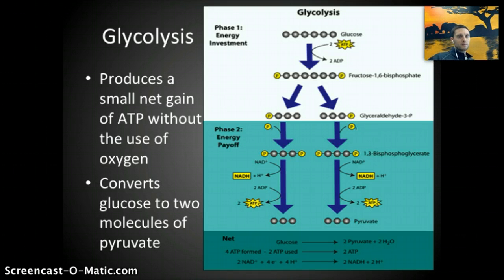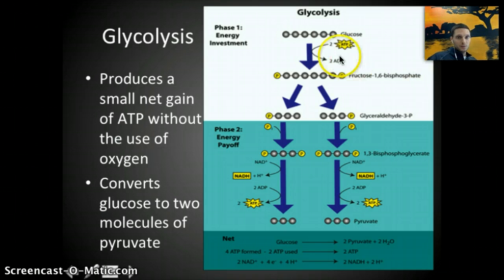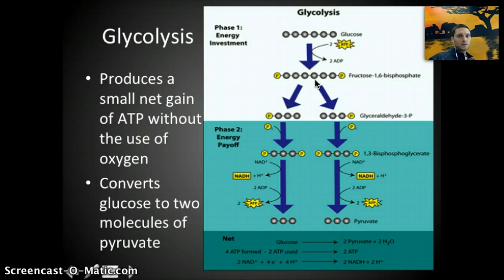Let's look at glycolysis in more detail. It produces a small net gain of ATP without the use of oxygen and converts glucose to two molecules of pyruvate. In the first phase, energy is actually used: starting with a molecule of glucose, two ATP are used to attach two phosphates to the molecule. Enzymes rearrange the glucose into fructose. Glucose and fructose are both monosaccharides containing six carbons, 12 hydrogens, and six oxygens. The fructose now has two phosphates attached at the first and sixth carbons — fructose 1,6-bisphosphate.